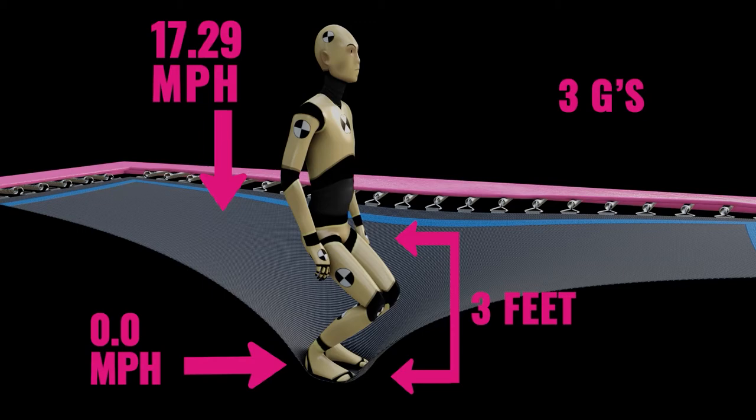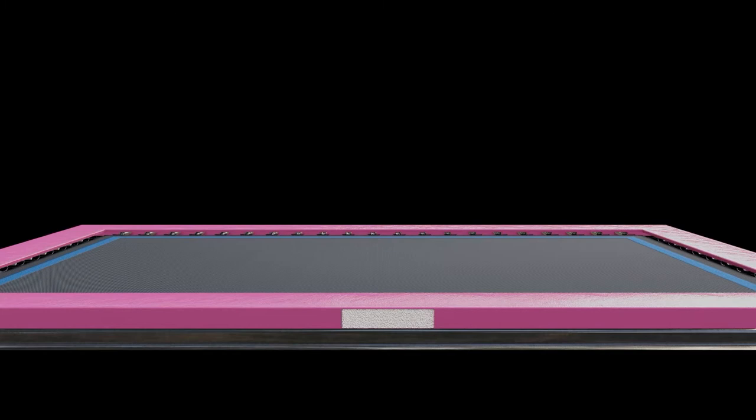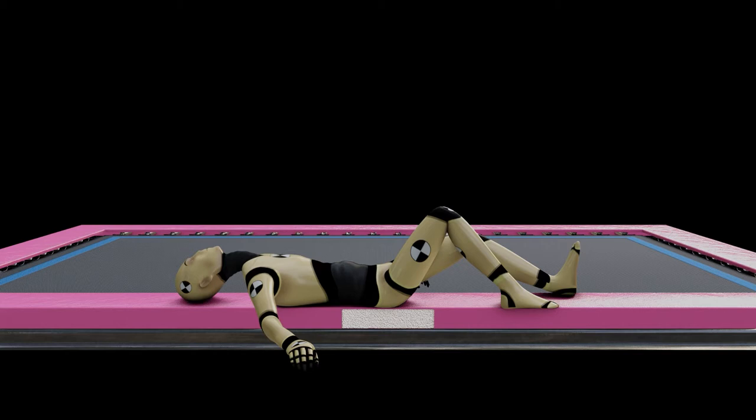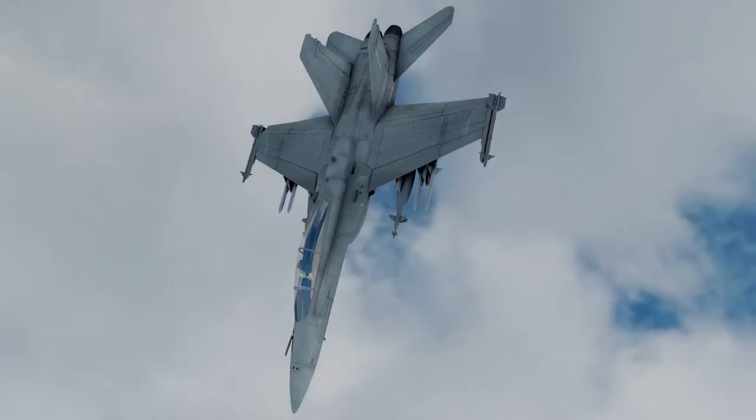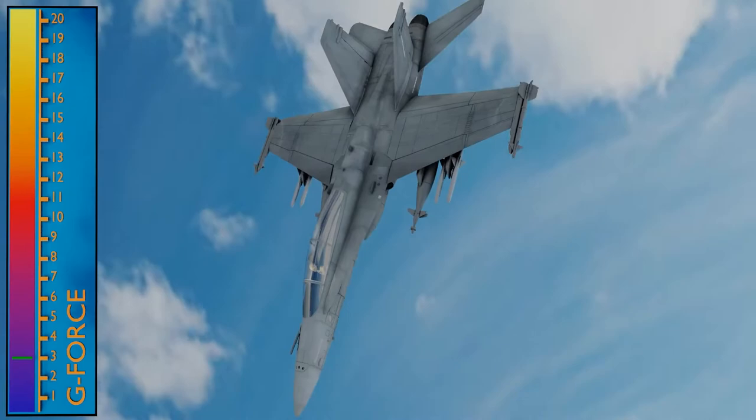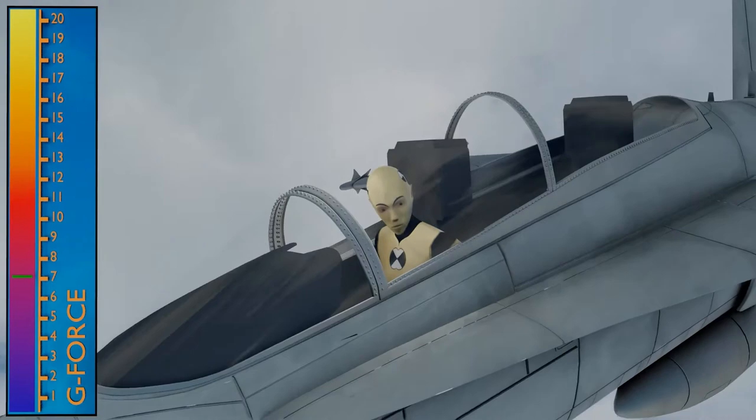ASTM standards require trampoline frame pads to be 2 inches thick. When a person loses control and lands on a padded frame, the body must decelerate within that 2 inches. In a 10-foot fall, this can easily put stresses on the body of more than 50 g's at the point of impact. To put that in perspective, a trained military pilot will pass out at around 9 g's. 50 g's of stress is not something you should make a regular habit of — it can easily result in serious injury.